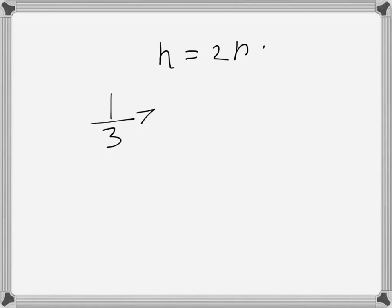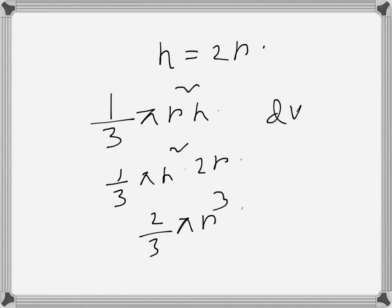The volume of a cone is (1/3)πr²h. Since h = 2r, we can say (1/3)πr²(2r), so V = (2/3)πr³. The rate at which the sand is dropped is 8 cubic meters per minute, so dV/dt = 8 m³/min.